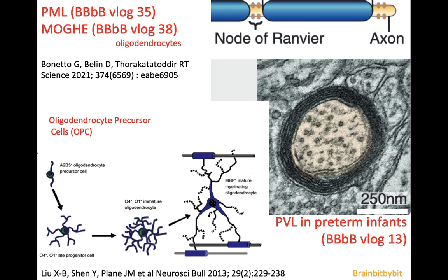In multiple sclerosis there is breakdown of myelin that is formed by oligodendrocytes. I've already talked about oligodendrocytes in previous vlogs about progressive multifocal leukoencephalopathy and myelin in epilepsy. I showed an electron microscope image at a scale of a quarter of a micron where you can see how the oligodendrocyte has wrapped the myelin around the axon, and I've also talked about oligodendrocyte precursor cells from which oligodendrocytes are derived, in PVL in preterm infants.